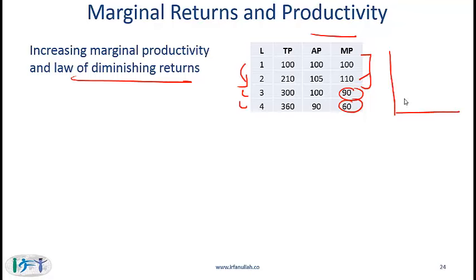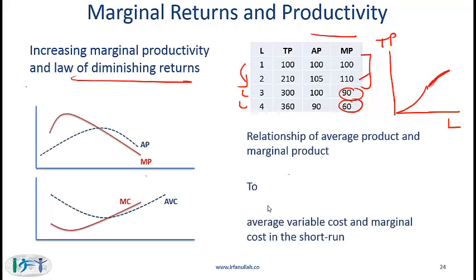With labor on the x-axis and total product on the y-axis, initially total product goes up at an increasing rate. But as we keep adding labor, total product continues to go up but at a lower rate. This is where we have diminishing returns.